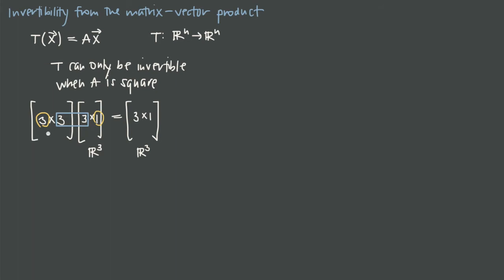If we say that A is a square matrix, then based on how matrix multiplication dimensions must work out, that tells us we can only be transforming from the same space to the same space. We could also work backwards: starting with a 3×1 input and 3×1 output, we'd derive that the matrix must be square with dimensions 3×3. Either way, these two facts go together. So if the transformation T is going to be invertible, A has to be square and the transformation must occur within the same space, not across spaces.